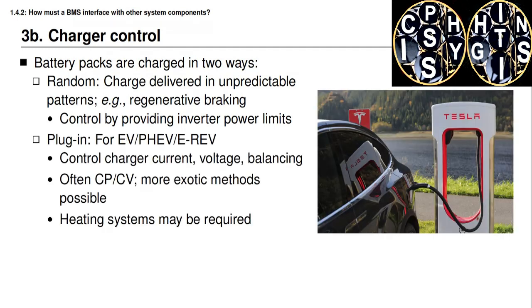Control of random charging is done by providing the host application with charge power limits that must be obeyed at all points in time. These power limits are dynamic in the sense that they change as the state and the environment of the battery pack changes. The battery management system must continually calculate how much recharge power the pack can safely accept and then transmit these limits to the host application.